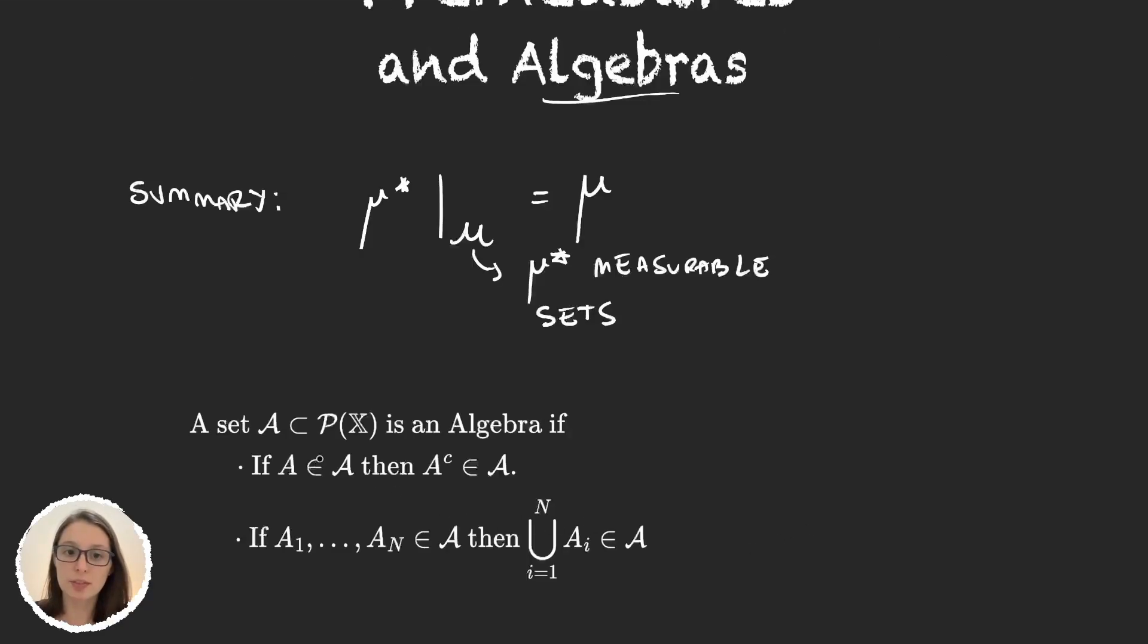So we have a subset A of parts of x, and we say that this set A is an algebra if it satisfies these two properties. The first one says that if we have a set A in the algebra, then its complement is also in the set. So this is telling us that algebras are closed by complementation. And the second property says if we have a finite sequence of elements in our algebra, then the union is also in our algebra. And here is very important that this sequence is finite.